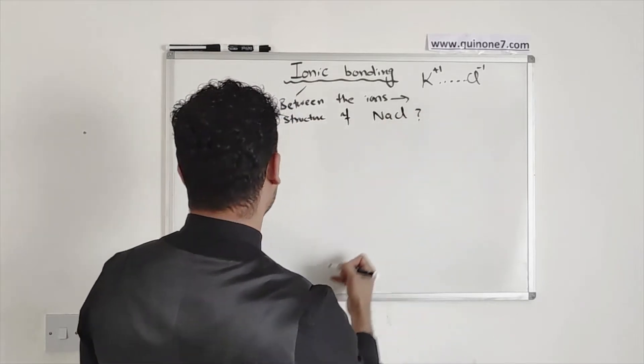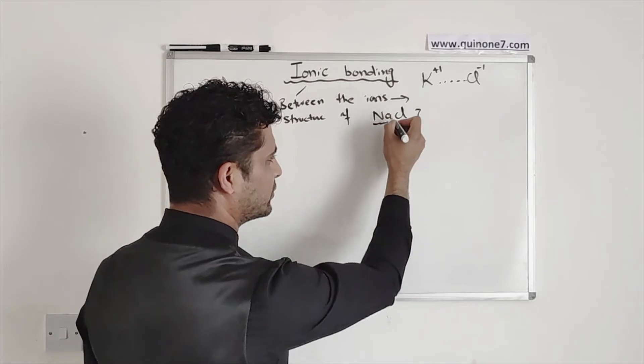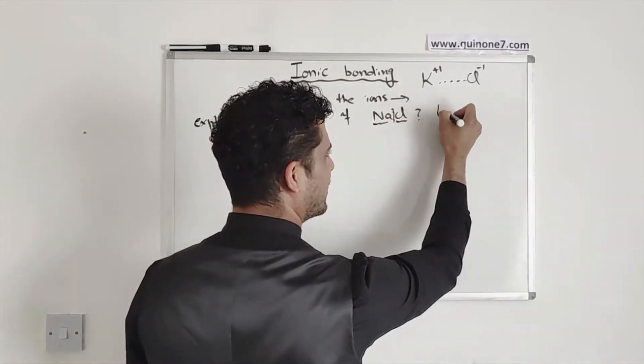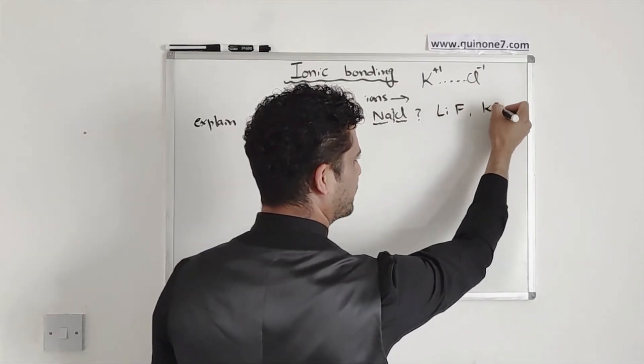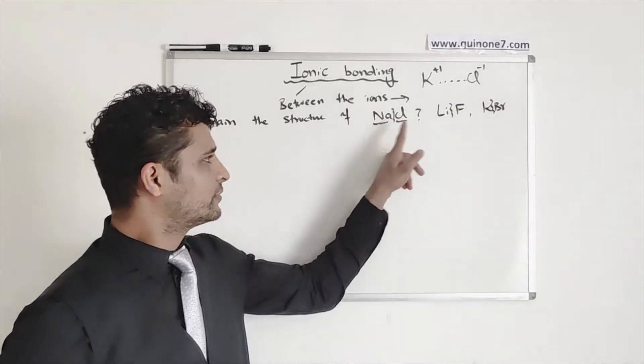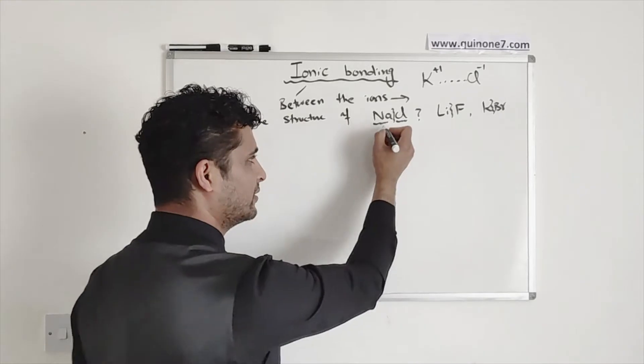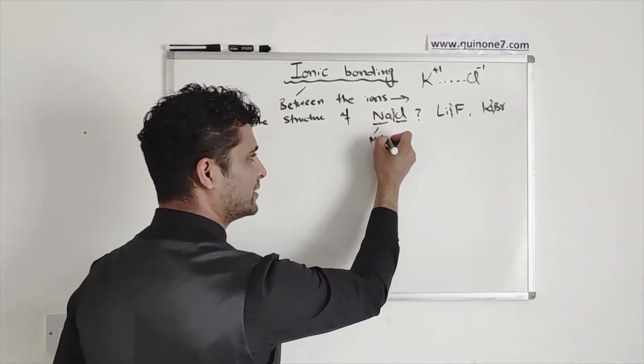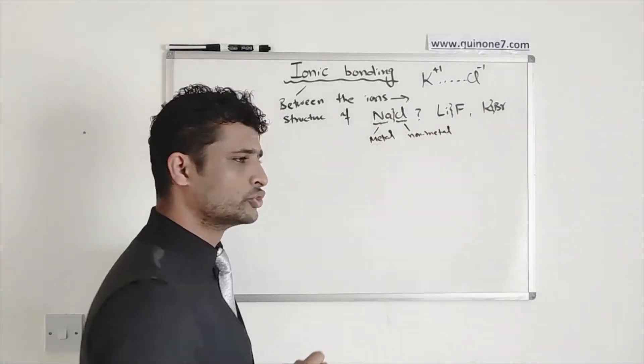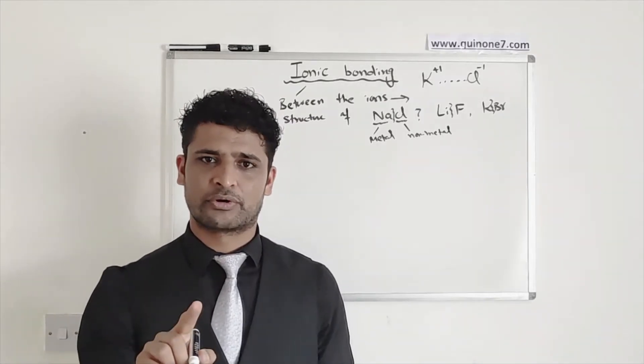If they say explain the structure of sodium chloride, you can actually predict it. Sodium and chloride are the two parts, or they can say lithium fluoride or potassium bromide. You can see that all of the first atoms of this molecule is actually a metal. A metal and this one is a non-metal. So ionic compounds actually happen between the metals and the non-metals.